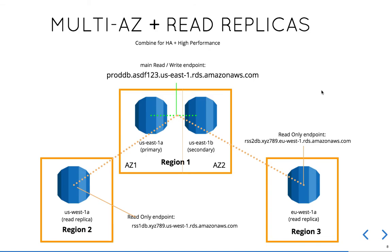When you combine these two powerful features — multi-AZ and read replicas — you can achieve a high-performance, high-availability environment. In the diagram, region one has a primary and secondary database using multi-AZ replication with one main read-write connection string. Additionally, there are two read replicas in two different regions: one in US West and one in the European region, each with its own connection string. This architecture combines HA and high performance for both scaling and redundancy.